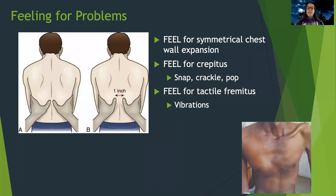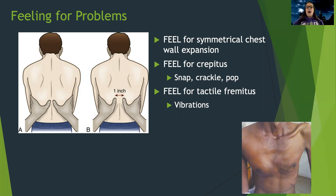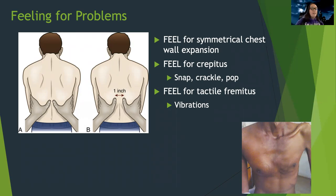We want to feel for chest wall expansion and make sure it's expanding equally. If there's concern for a collapsed lung, we want to feel for crepitus — sub-Q air. We generally don't perform tactile fremitus assessment at the nursing level — that's where you place hands on the patient and have them say 99 to feel the vibrations — but that may come with advanced practice.